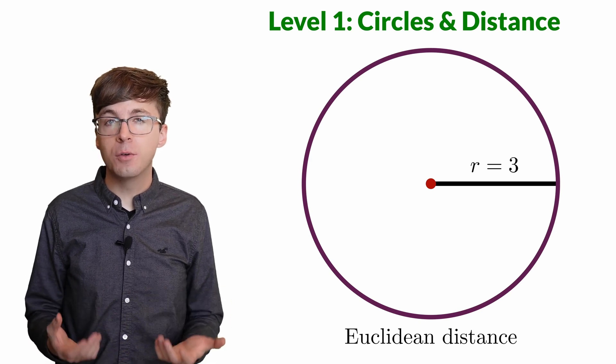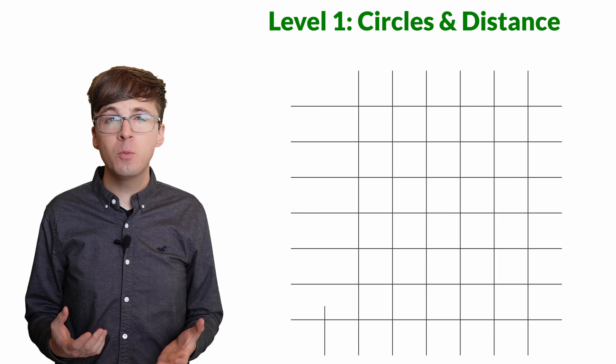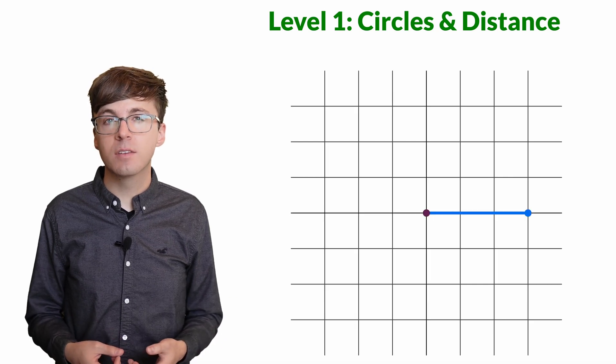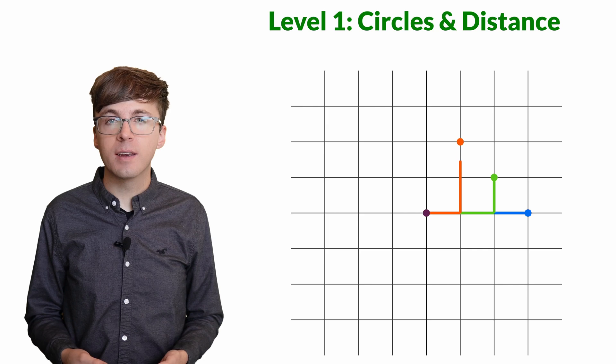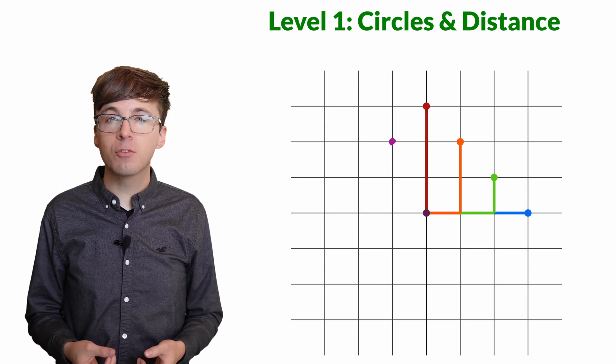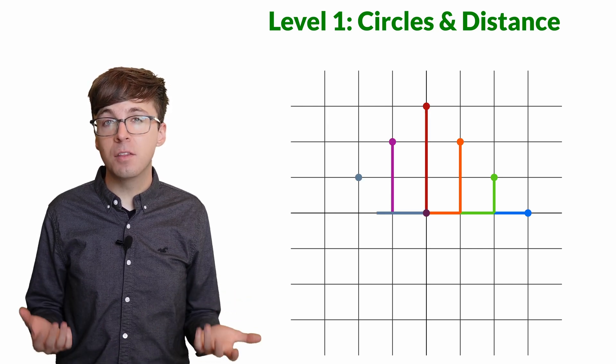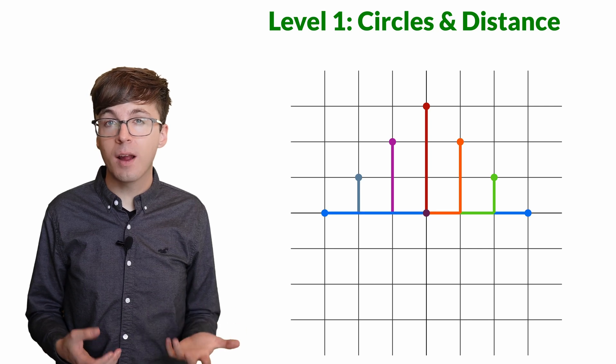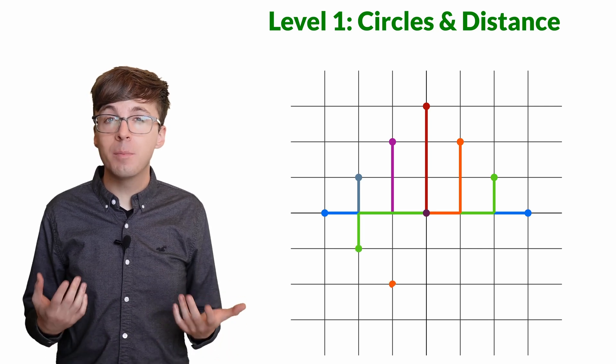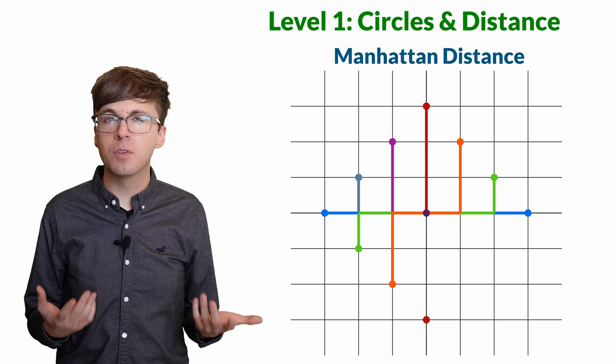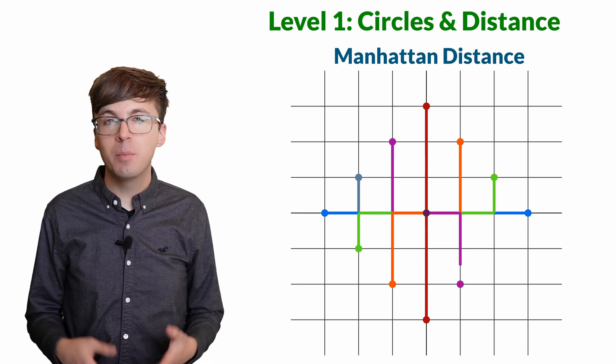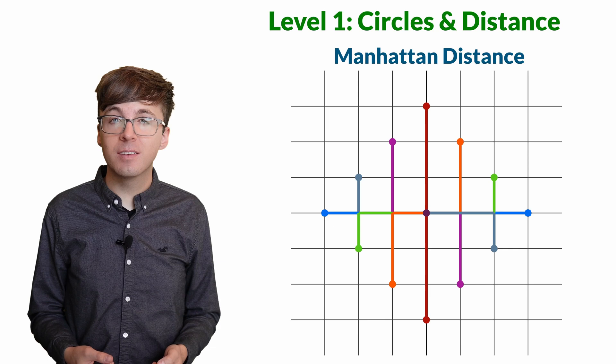This distance is called the Euclidean distance. Sometimes we need a different notion of distance, like if we're walking along streets in a square grid. Since we can only move along the streets, a distance of three gets us to these points that form a square instead. This is called the Manhattan distance since it resembles navigating city streets.